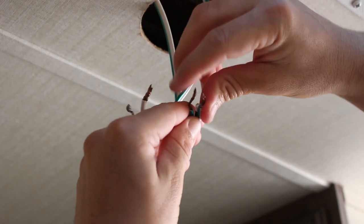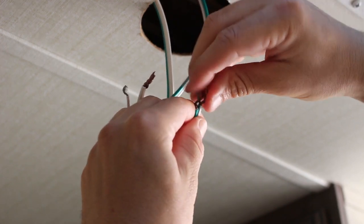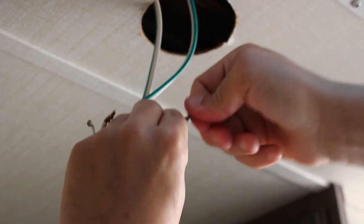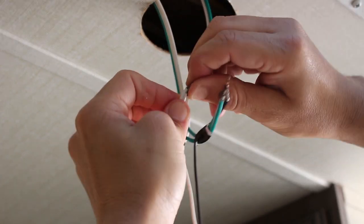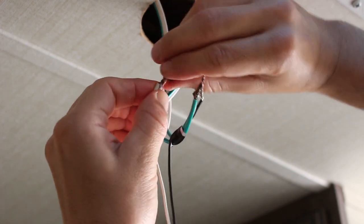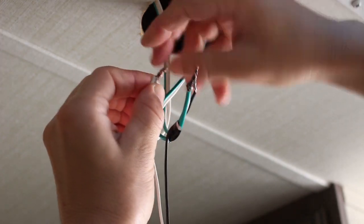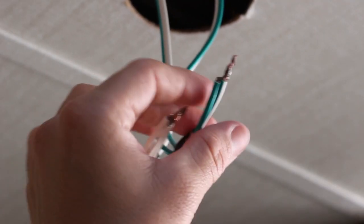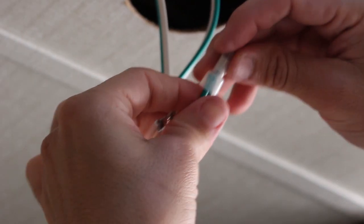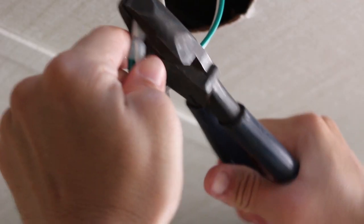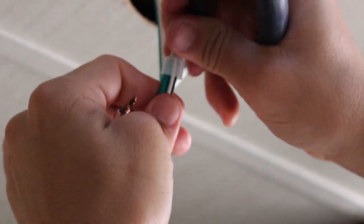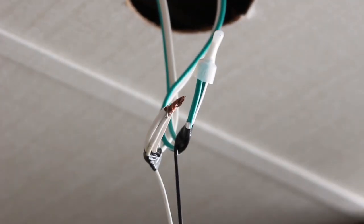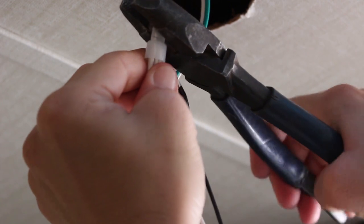Once removed, splice in the new puck light by twisting the wires together, insert them inside a new closed end crimp connector and crimping it, then repeating the process with the other wire.